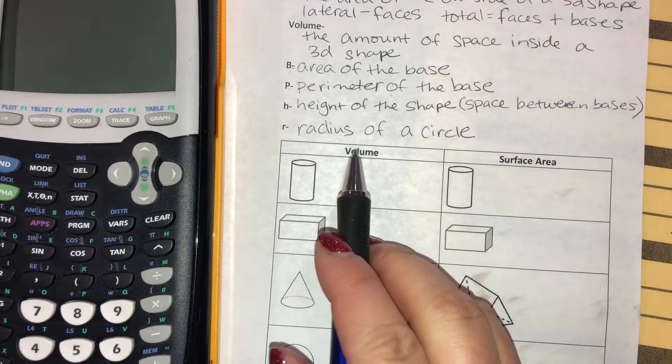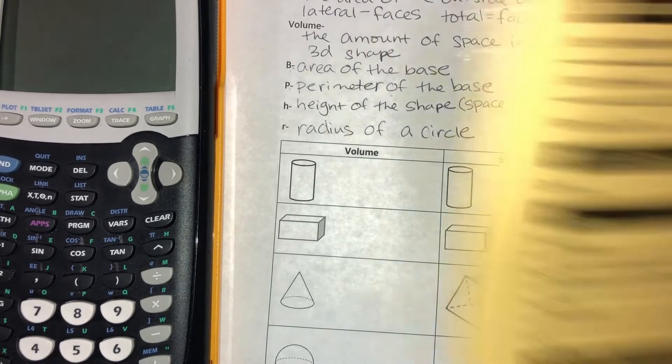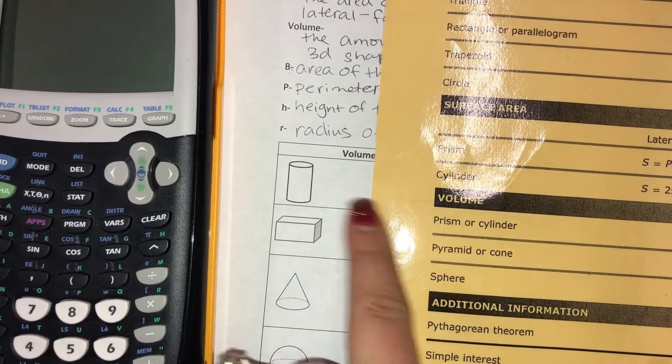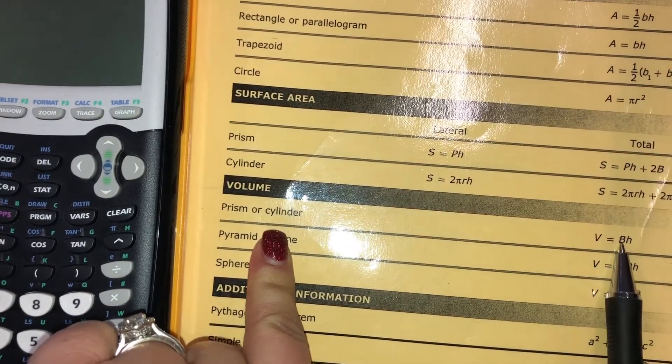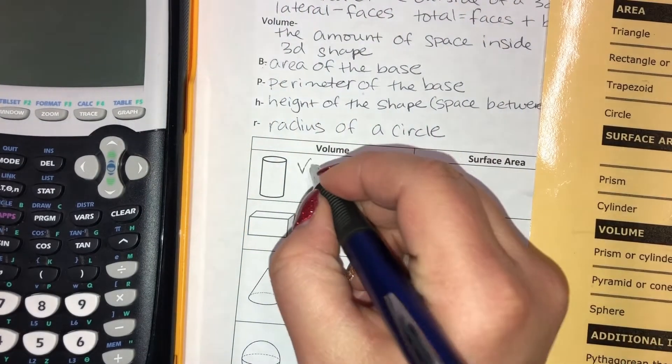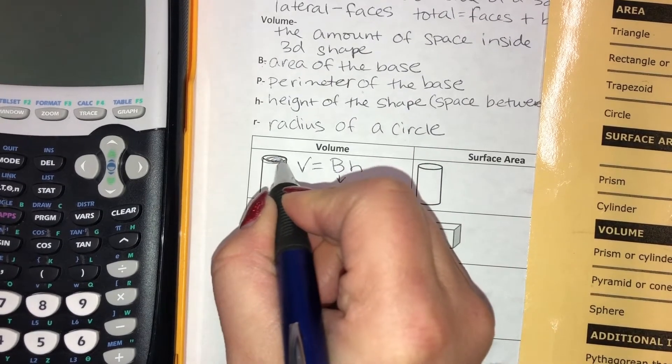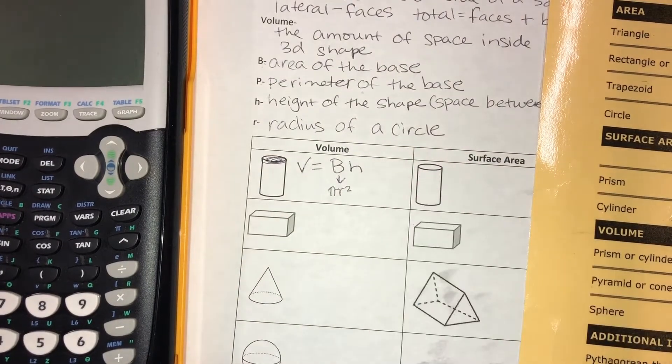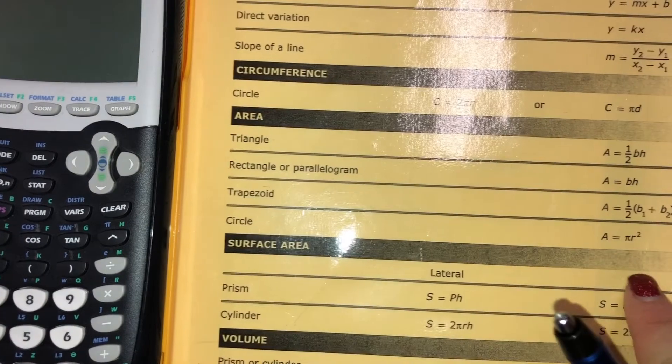When you've got a question about a particular shape, you need to go straight to the formula chart. So if it says volume, you need to go to the volume section. Volume of a cylinder - there's your word. Follow it across to your formula and write your formula every shape, every time. This would be V equals BH. The B, since this base is a circle, means that you would have to do pi R squared because you have to find the area of a circle.